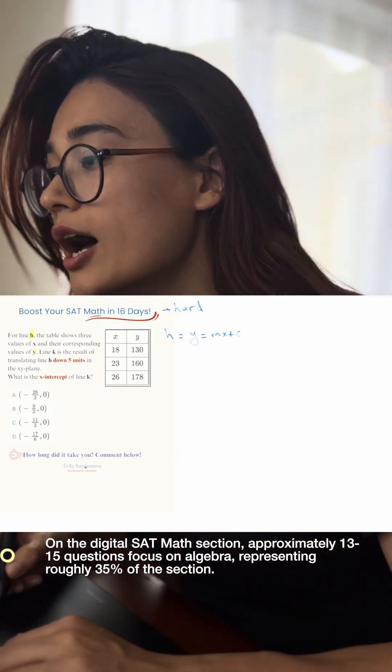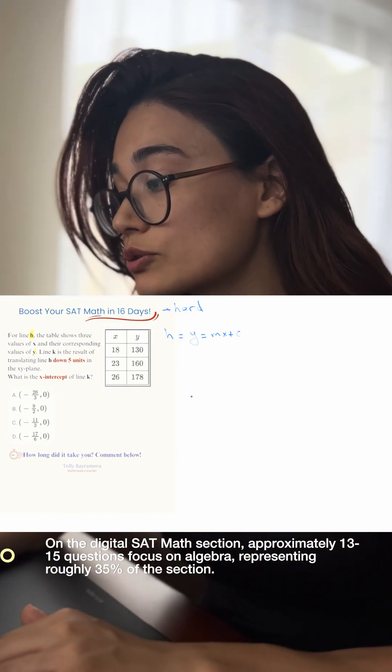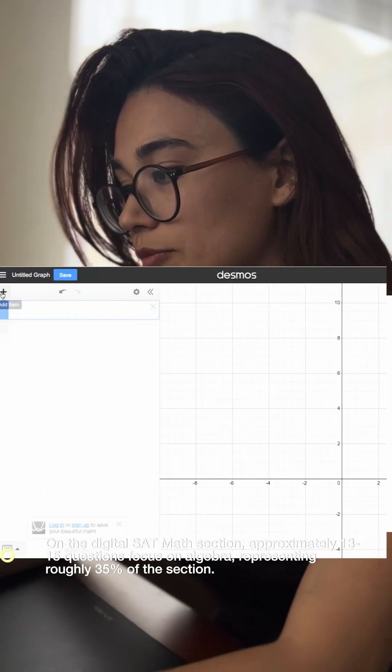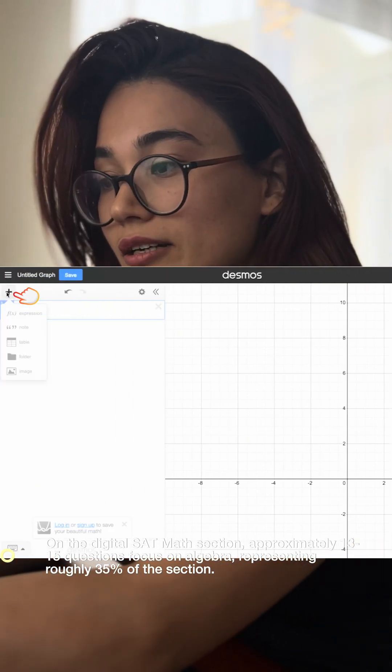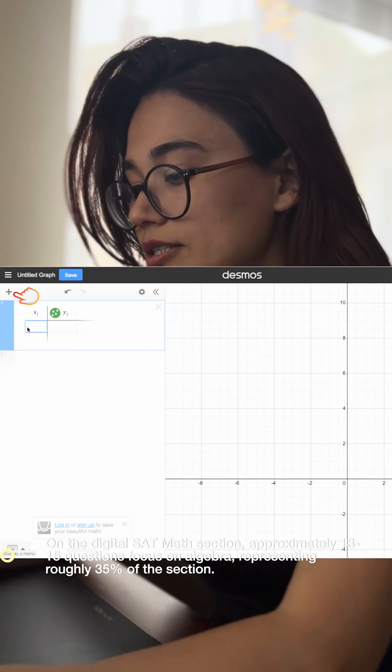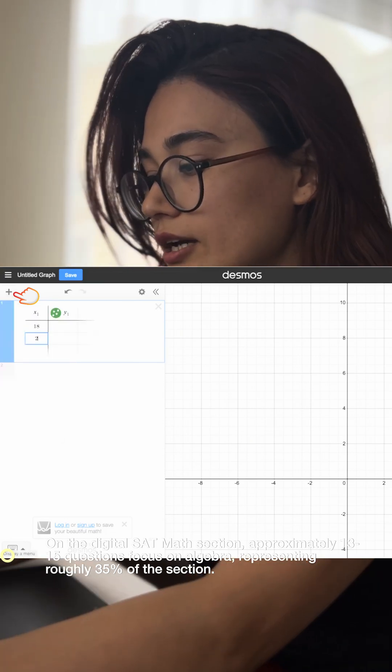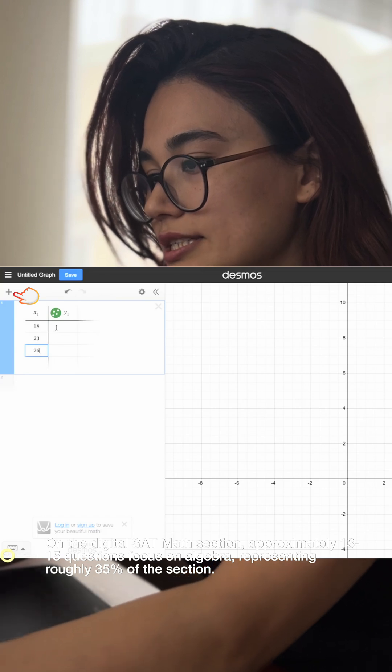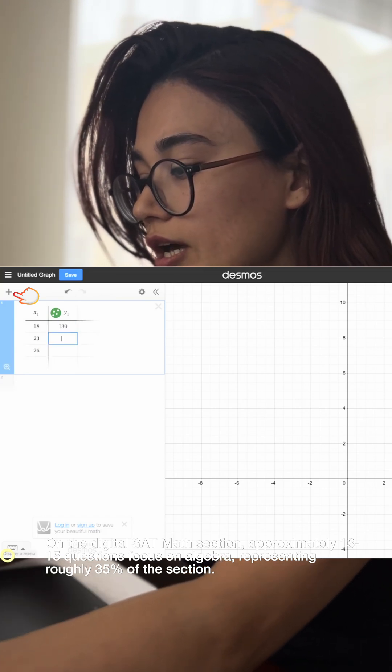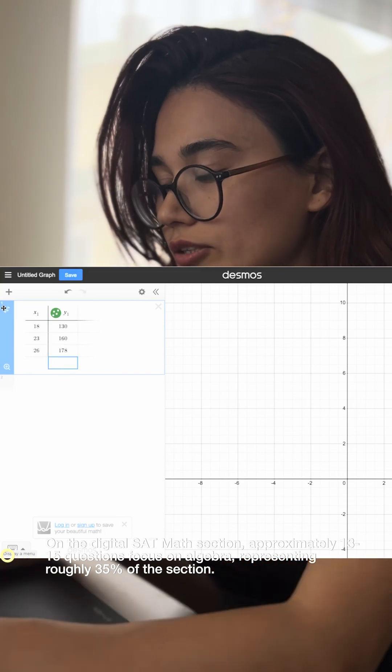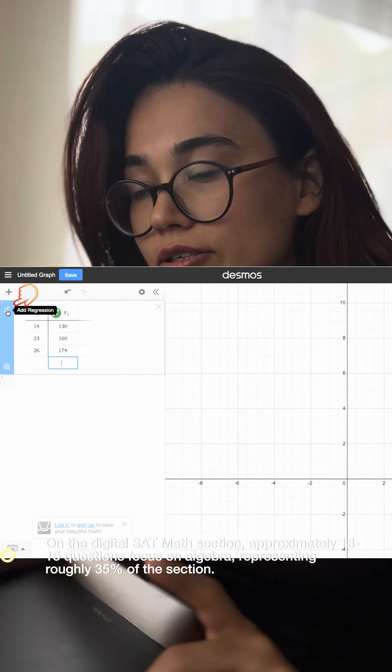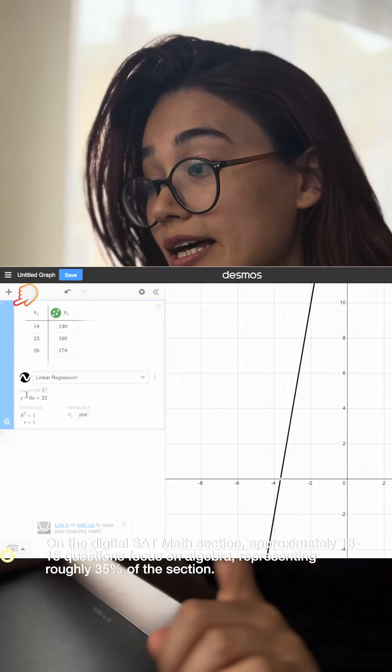In Desmos, there's a plus section which is 'add item'—press this and select table. There are values for x and y. Let's see: x is 18, 23, and 26, and the values of y are 130, 160, and 178. Write the numbers down. There's an 'add regression' section, so press there and it will give you the equation of the line and the graph. I found h: 6x plus 22.